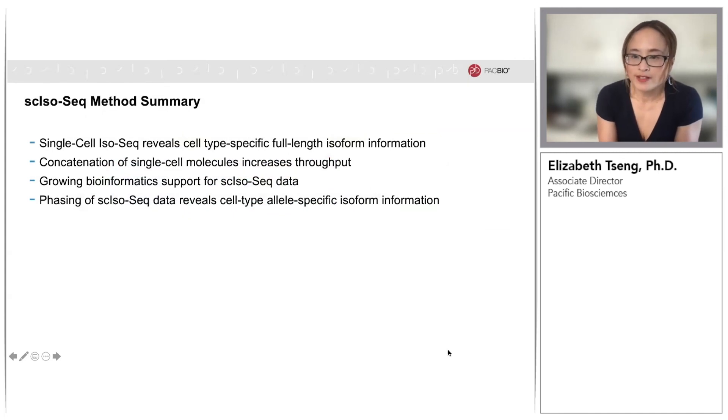To summarize, the single-cell Iso-Seq method reveals cell type-specific full-length isoform information. We've shown that there are now several attempts of concatenation of single-cell molecules to increase throughput while having minimal effects on the bioinformatics workflow. There is an increasing suite of tools developed both at PacBio and in the community for supporting such single-cell data. And finally, I find the idea of being able to phase single-cell Iso-Seq data very exciting.